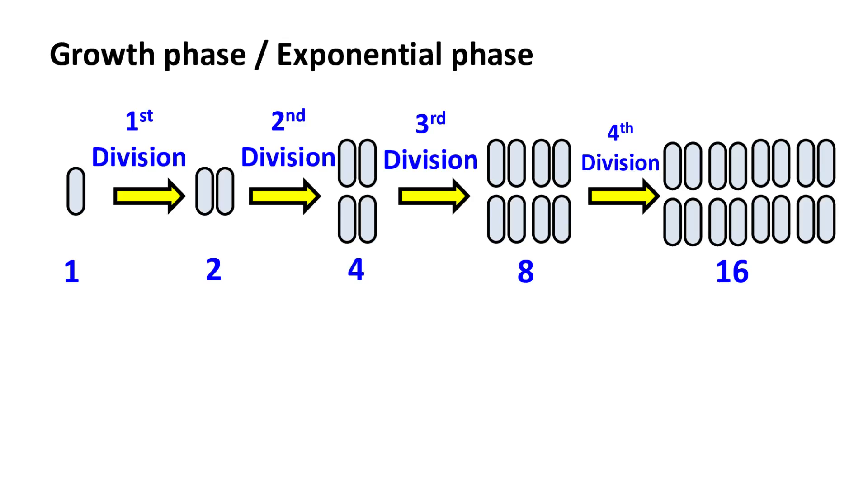Here mathematically the cells are doubling, hence one cell can be represented as two raised to zero, which is one. When one cell divides into two, we can represent this as two raised to one, which is two. Two cells further divides to form four cells, hence this can be represented as two raised to two, which is four.